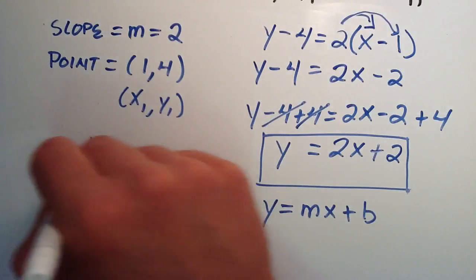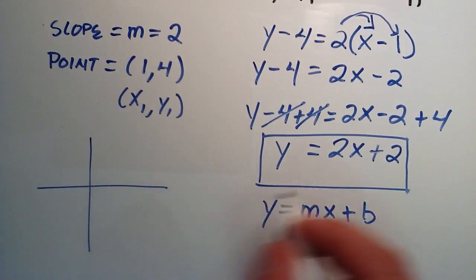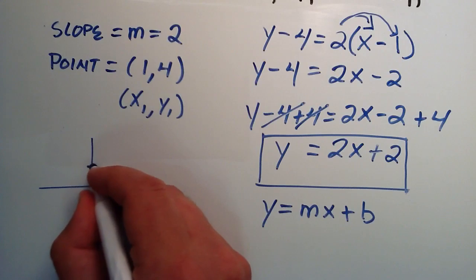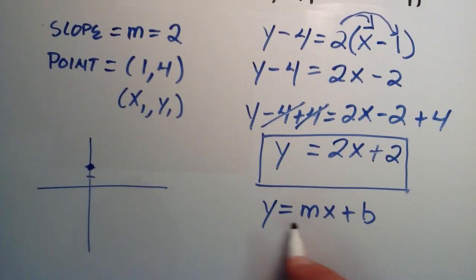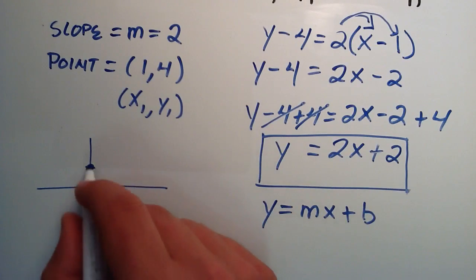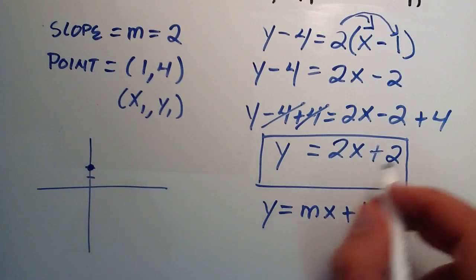So if we were to graph this line, we start at the origin and we go up 2 units in the y direction. If you're unfamiliar with what I'm doing, see my last tutorial about the slope-intercept form of a line. But we go up 2 units in the y direction because our b equals 2.